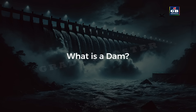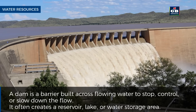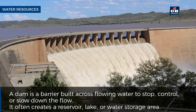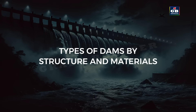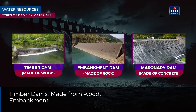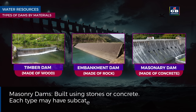A dam is a barrier built across flowing water to stop, control or slow down the flow. It often creates a reservoir, lake or water storage area. Types of dams by structure and materials include: timber dams, made from wood; embankment dams, made from earth or rock; and masonry dams, built using stones or concrete. Each type may have subcategories.